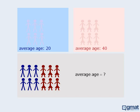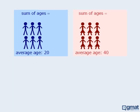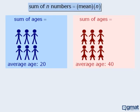If you said 30, you're right. To see why, let's find the sum of the ages of the men and the sum of the ages of the women. We will use the following formula. Since the average age of the men is 20 and there are 6 men altogether, the sum of their ages will be 20 times 6, which is 120. When we apply the same formula to the population of women, we see that the sum of their ages is 240.